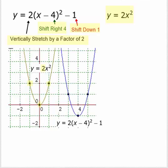Now we shift these three points 4 to the right and down 1. We start with the vertex, the lowest point of the parabola. We go to the right 4 and down 1, which gives us a vertex of 4, negative 1. The other two points are shifted 4 to the right and down 1 as well. We go over 1 from the new vertex, up 2 to get another point, and over 1 to the left from the vertex, up 2 to get another point. We have our shifted graph, y equal 2 times x minus 4 quantity squared minus 1.